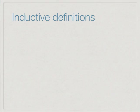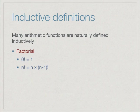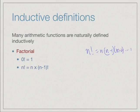For the last lecture of this week we will look at recursive functions. Recursive functions are typically based on what we call inductive definitions. In arithmetic, many functions are naturally defined inductively. The first and most common example is the factorial function: 0 factorial is 1, and n factorial can be obtained from (n-1) factorial by multiplying by n. So inductively, (n-1) factorial can be extended to n factorial by multiplying by n.